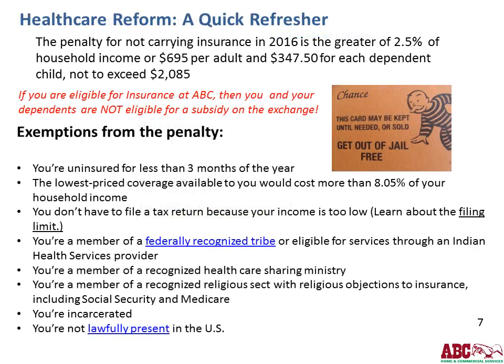As a reminder, healthcare reform requires that all individuals carry medical insurance. The penalty for not carrying medical insurance in 2016 is the greater of 2.5% of household income or $695 per adult and $347.50 for each dependent child, not to exceed $2,085. Note that if you're eligible for insurance at ABC, you and your dependents are not eligible for a subsidy on the exchange.